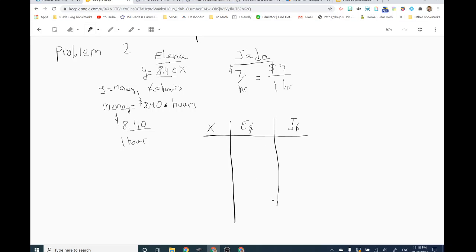Let me just put some hours here. One hour, two hours. They asked us about 12 hours. So let's go one, two, I don't know, four, 12. We need to go up to at least 12 hours. X is hours. I like to put my units there. If Elena works one hour, let's put the number in. Y equals 8.40 and X equals 1 because that's what we're using here. How much does she make? She makes $8.40.